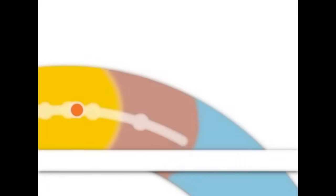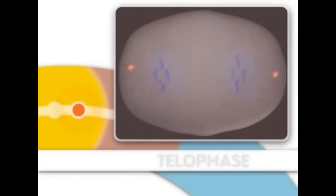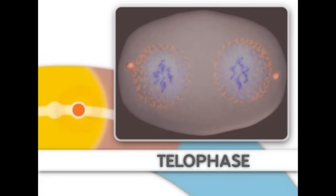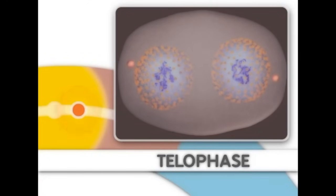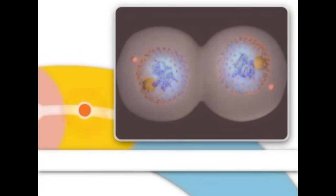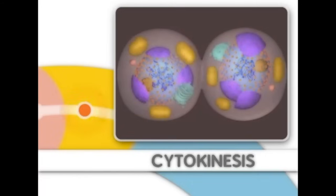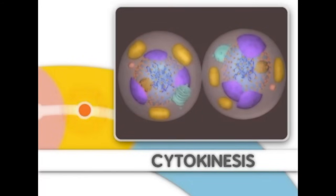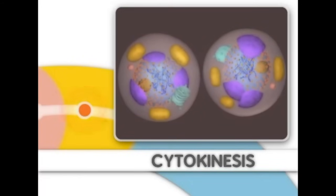Finally, during telophase, nuclear membranes reappear around the two sets of chromosomes. Mitosis is now complete. After mitosis, two new cells are formed by a process called cytokinesis.